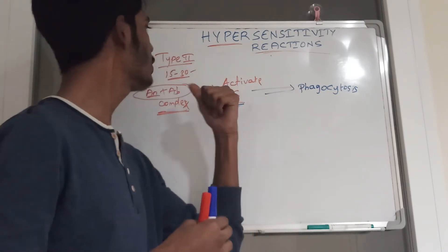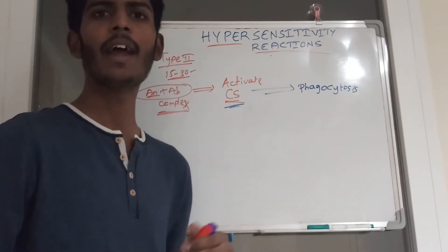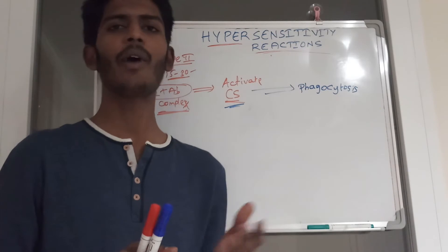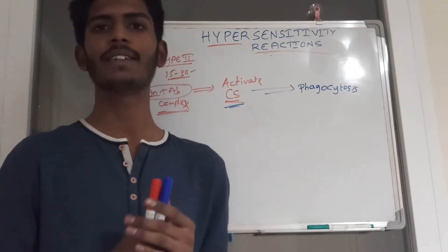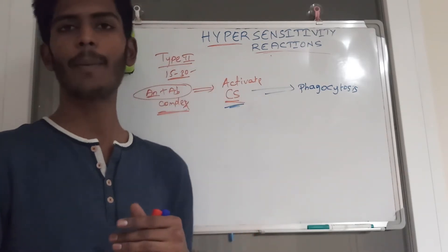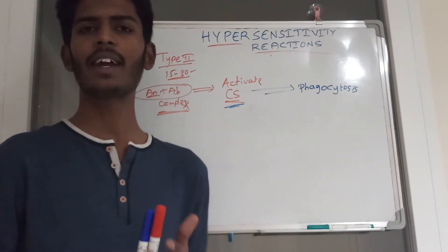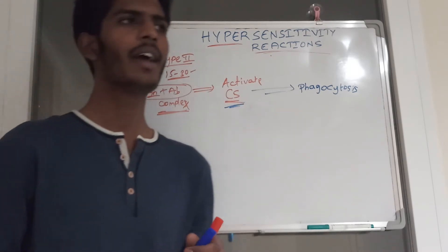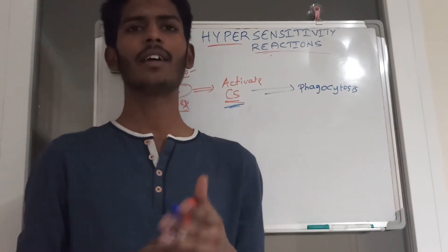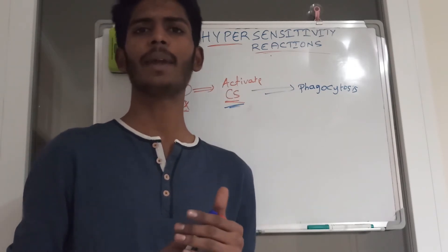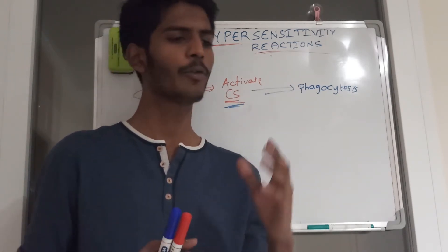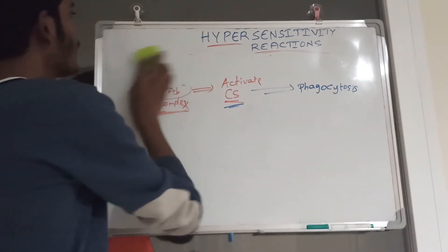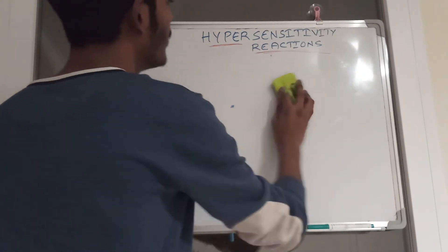The best example of Type 2 is a blood transfusion mismatch — if there is a mismatch, the pre-existing antibodies trigger a Type 2 hypersensitive reaction. Other examples include autoimmune hemolytic anemia, where antibodies are directed against one's own red blood cells, and immune thrombocytopenic purpura. In autoimmune hemolytic anemia, the Coombs test is used to detect antibodies against the patient's own RBCs.